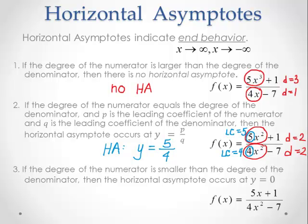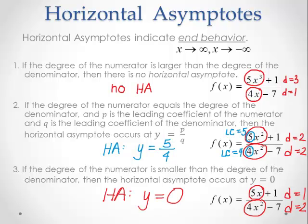The third and final case: if the degree of the numerator is smaller than the degree of the denominator, the horizontal asymptote occurs at y equals 0. In this example, the degree of the numerator is 1 and the degree of the denominator is 2. Since 1 is smaller than 2, the horizontal asymptote is always going to be at y equals 0.